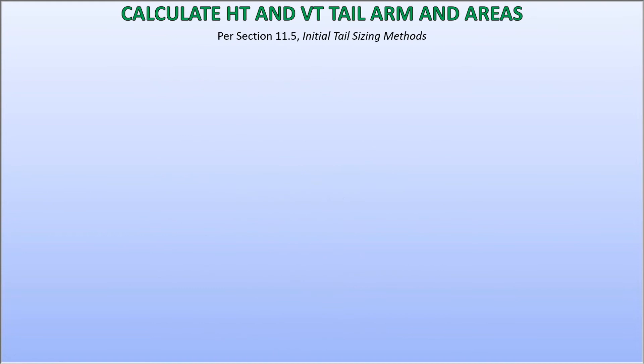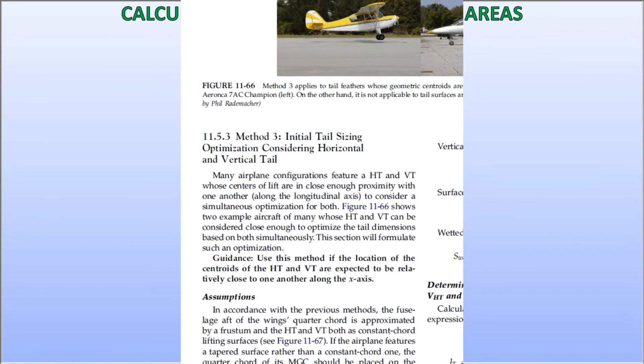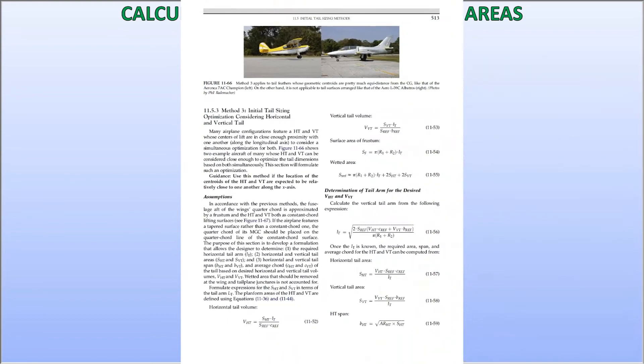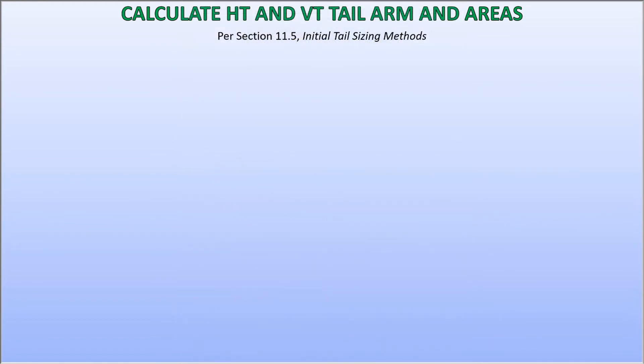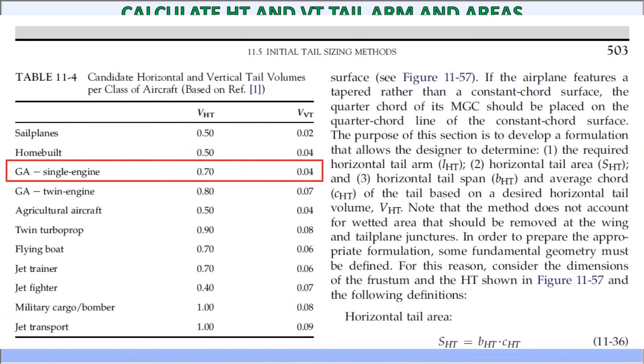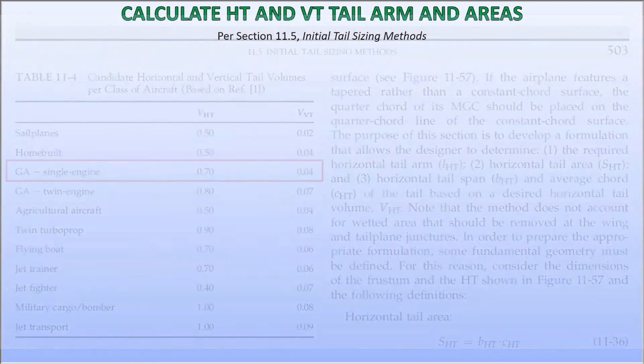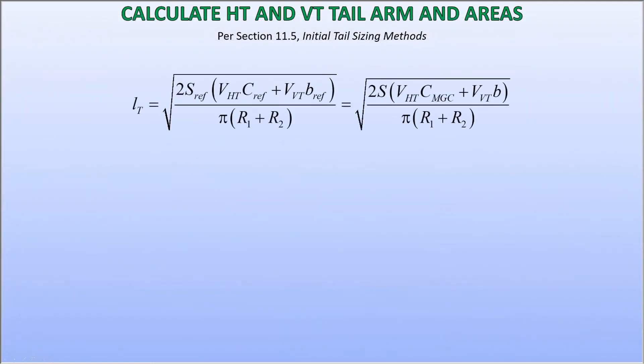We can take this a step further and perform a minimum drag-optimized tail design using method 3 of section 11.5 in my book. In part 2 of this video series, I mentioned a horizontal tail volume of 0.7 and vertical tail volume of 0.04 for typical single-engine general aviation aircraft. These values were obtained in table 11-4 in the book. They represent the averages of typical certified aircraft in this class, which implies that if they are good enough for those aircraft, they should be good enough for our aircraft too.